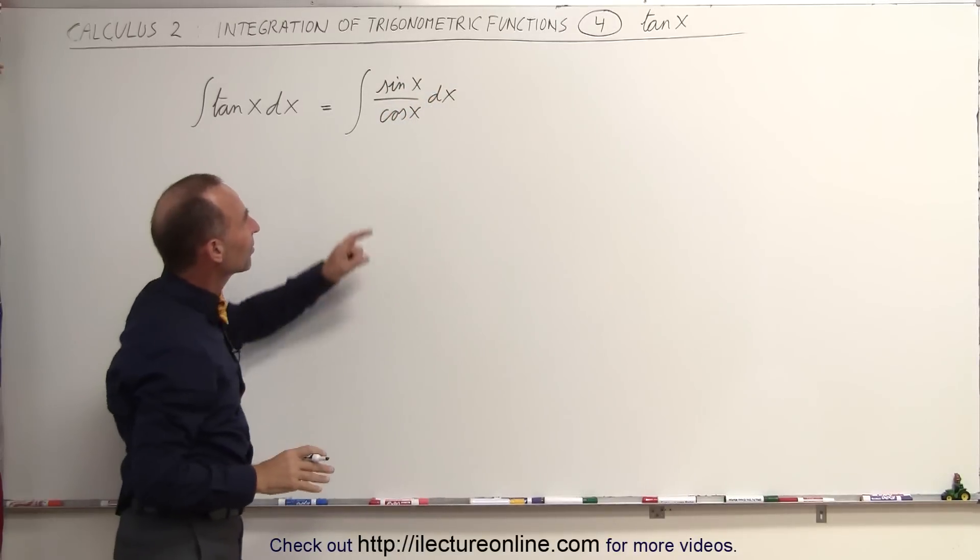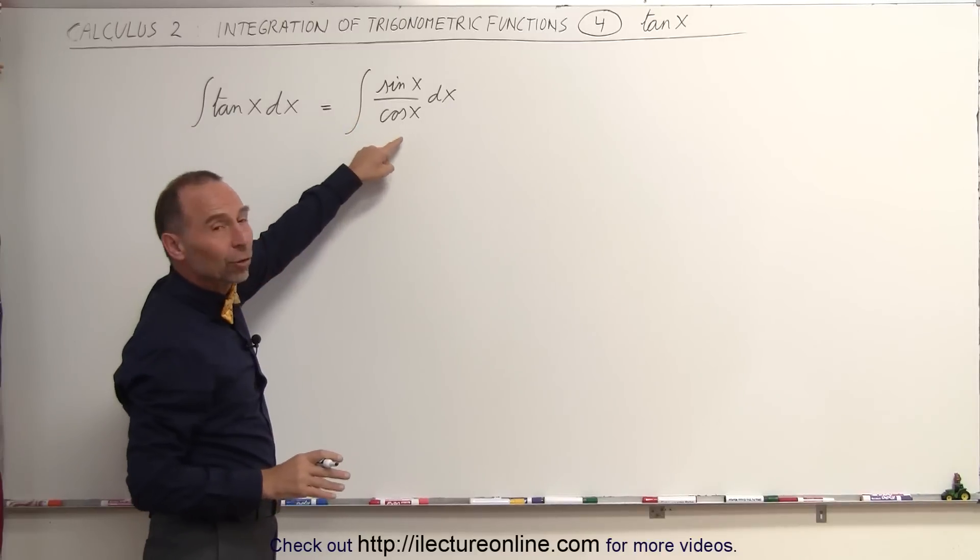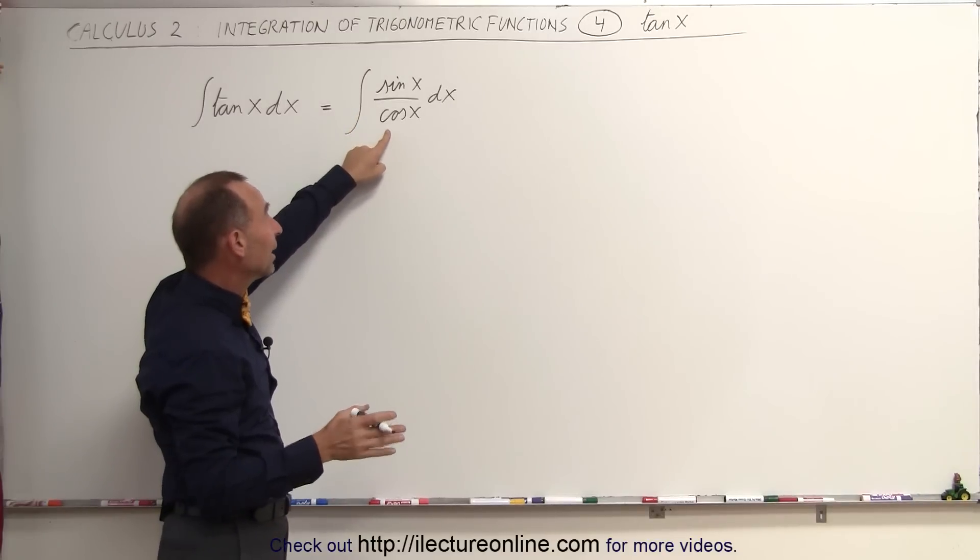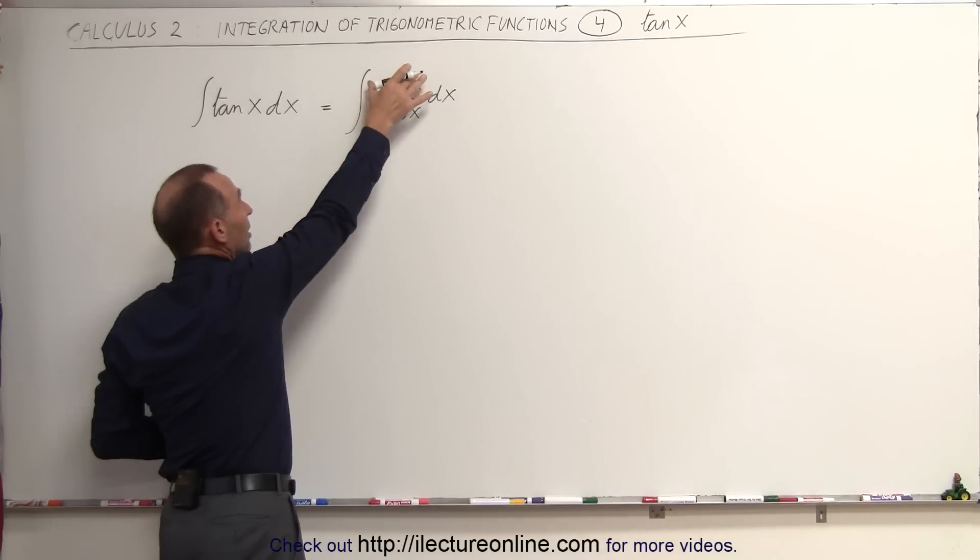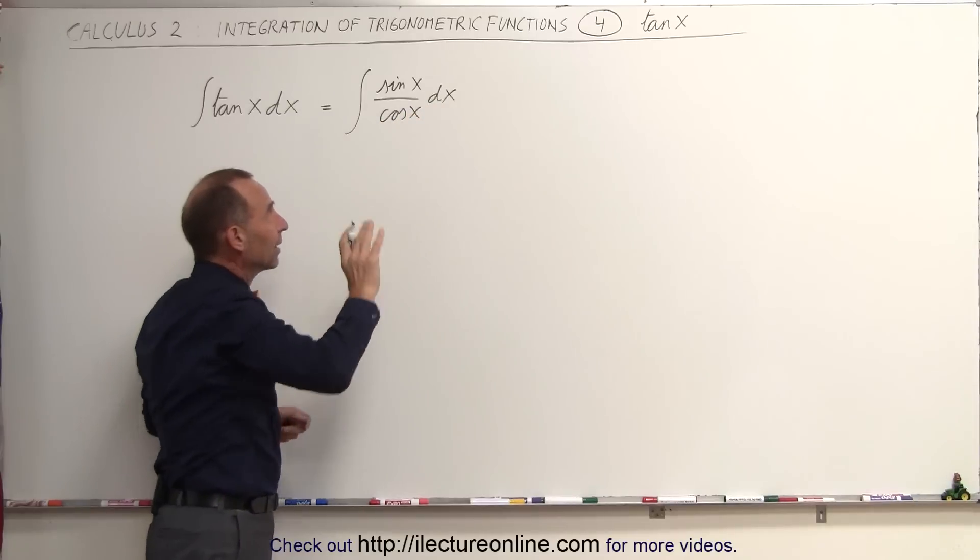Now you need to realize that the sine of x is related to the cosine of x in such a way that if you take the derivative of the cosine of x, you get the negative sine of x. So it looks like we have the differential here, and if we then write it as this,